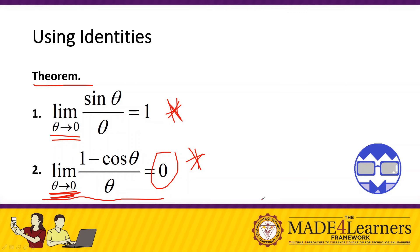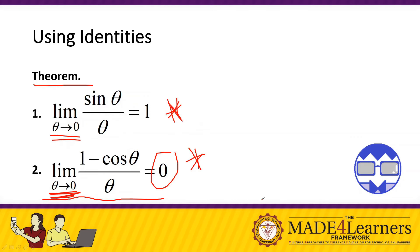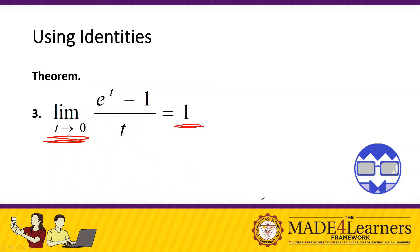I will leave theorem number two and theorem number three as your assignment. Try to prove them and evaluate if they are true: whether one minus cos theta over theta as theta approaches zero is zero, and whether e to the power of t minus one over t as t approaches zero is one. Now let's go to our examples.